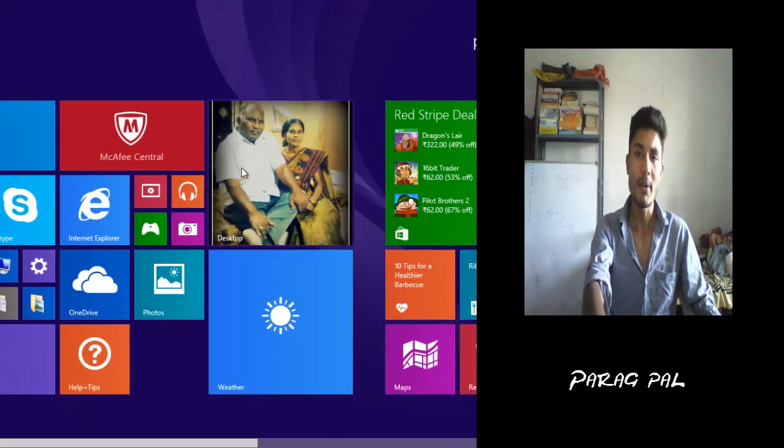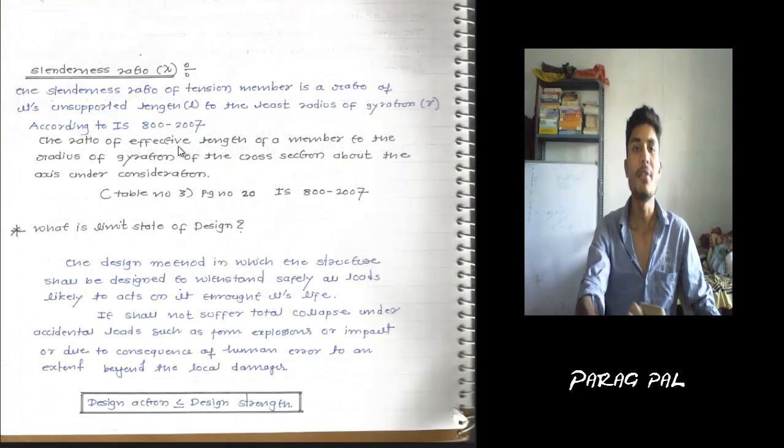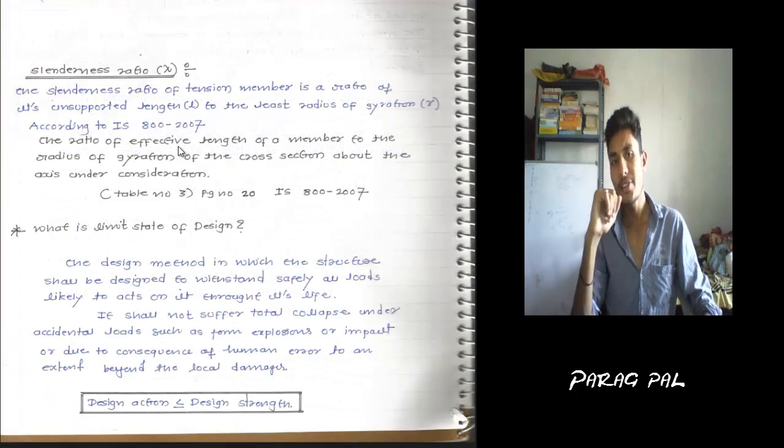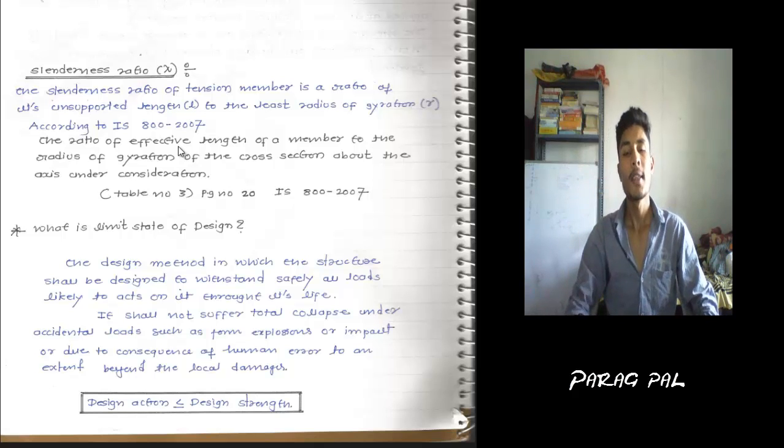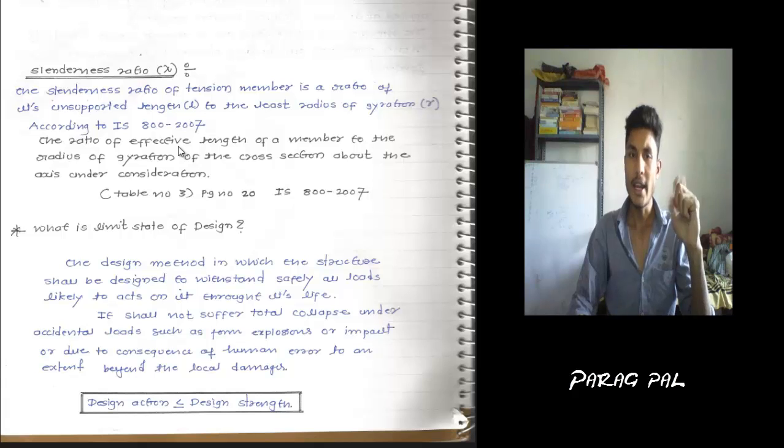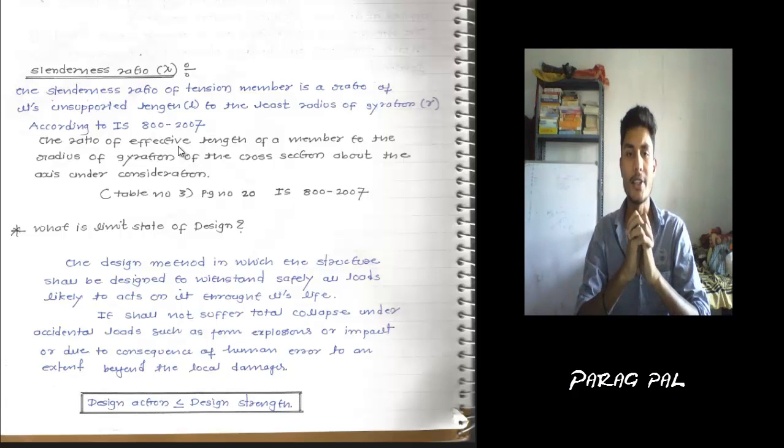These are all my format notes which I have converted into PDF files. Now the Slenderness Ratio - actually this lecture is about the bolting and welding. I have taken one part, part by part of all this lecture, bolting on one side and welding on the other side.